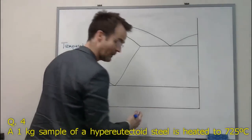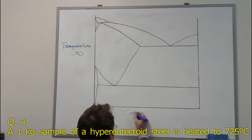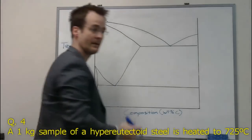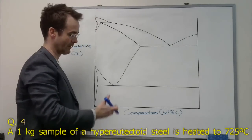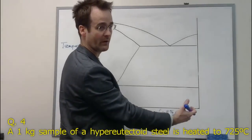Along the x-axis, we have composition in weight percent carbon. So remember, the composition axis is in weight percent of the component on the right.